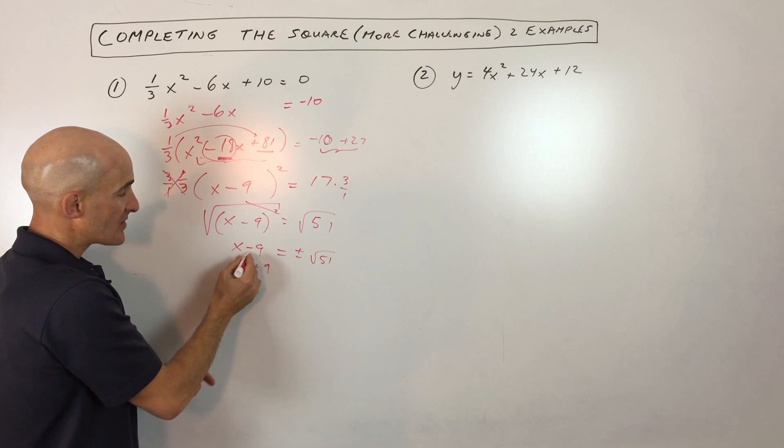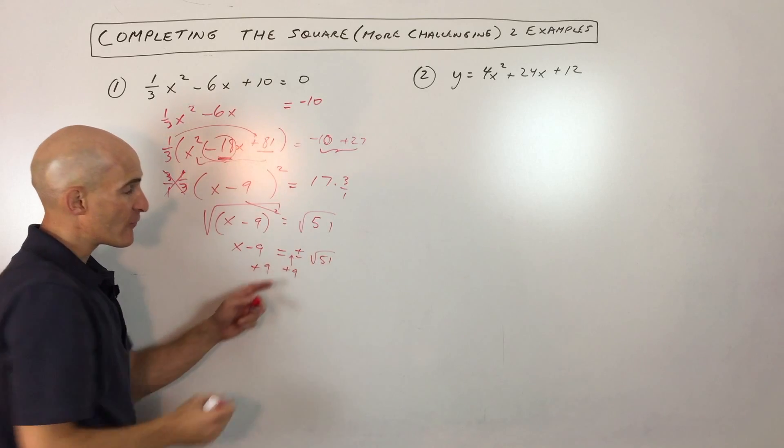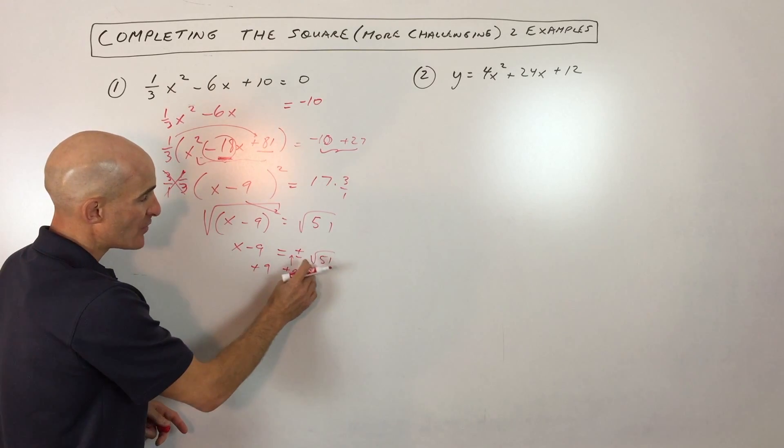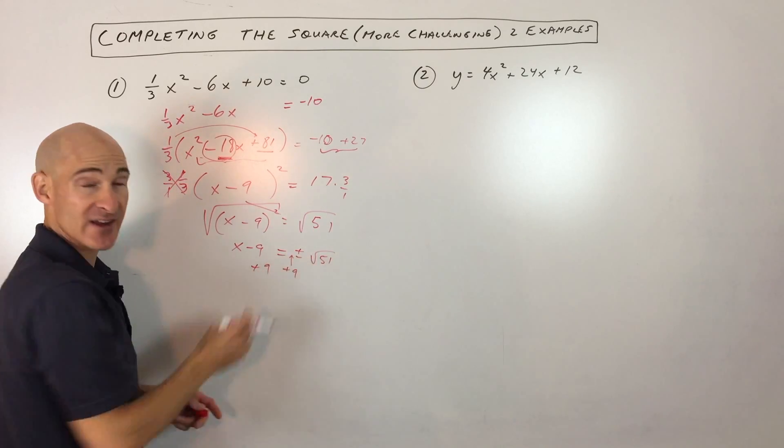And then what you want to do is add 9 because that's the opposite of subtracting 9. But when you do that, you want to do that in front of the plus or minus sign here on the right side. You don't want to say this is plus or minus square root of 51 plus 9. It's actually 9 plus or minus the square root of 51.